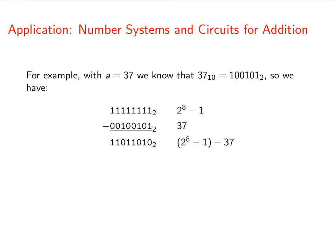We're going to subtract 37 from the number that's got all 1s, and that is just a bit flip.